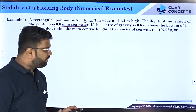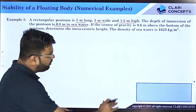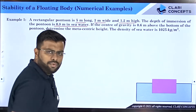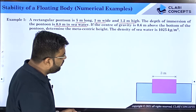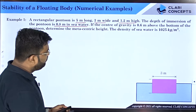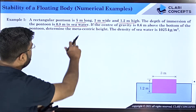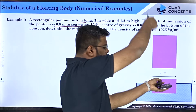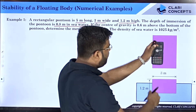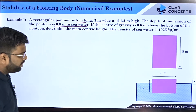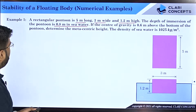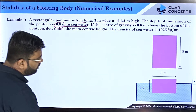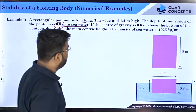So when the pontoon is lying on the surface of the sea water, the width is 3 meters and the height is 1.2 meters. When you look at it from the top, the length is around 5 meters. The depth of immersion is 0.8 meters, which means the submerged depth is 0.8 meters.